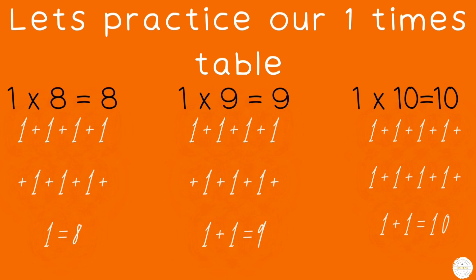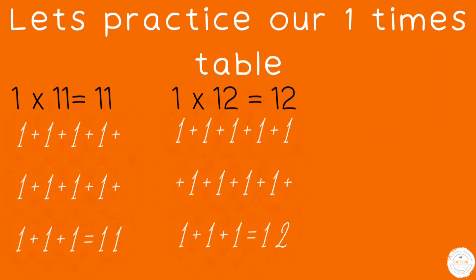One times nine equals nine. One times ten equals ten. One times eleven equals eleven, and one times twelve equals twelve. If you look at the bottom in white, you will be able to see how we work out our answers.